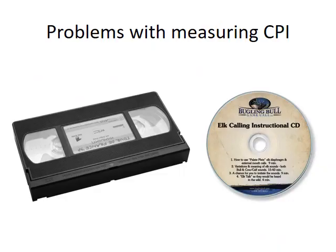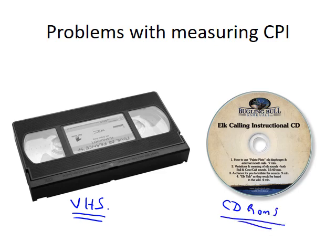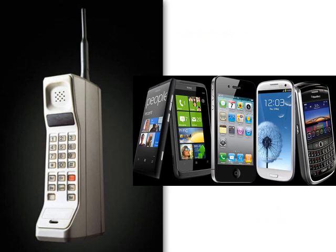What are some problems with measuring CPI? You might have VHS tapes or CD-ROMs in the basket that are pretty well obsolete. Even USB keys are falling more out of favor as things move to the cloud. What happens when things become antiquated and they're still in the basket? This represents an improvement in what a product can offer — it's worth much more because of improvements in quality, versatility, and functionality.